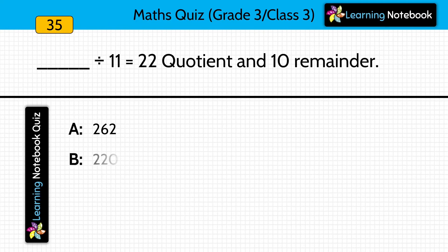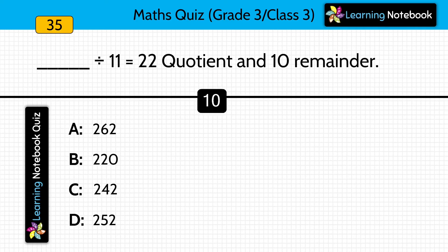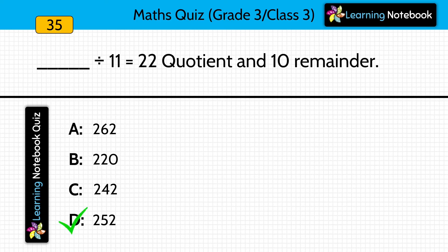Dash divided by 11 equals to 22 quotient and 10 remainder. Answer is 252.